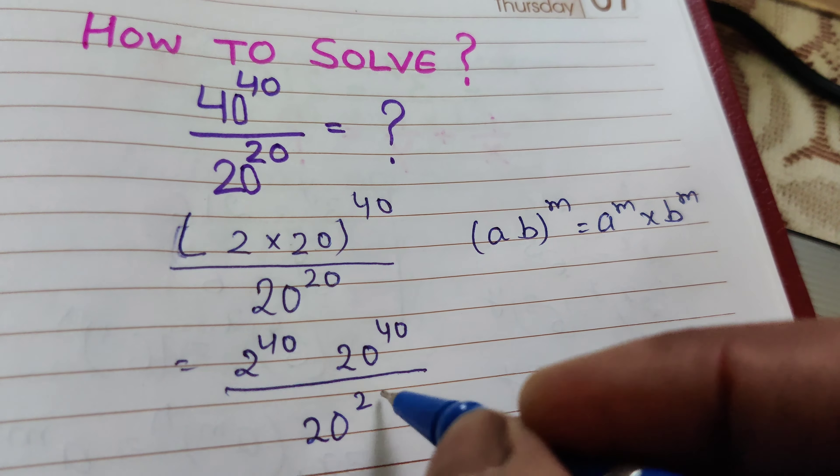These are the exponential rules. We have 2 raised to the power of 40, and we can write 20 raised to the power of 40 minus 20, which equals 2 raised to the power of 40 into 20 raised to the power of 20.